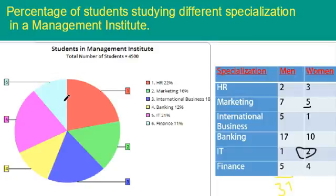Data Interpretation is one of the important topics in IBPS bank exams. Usually we get 20 to 25 questions from the DI part.